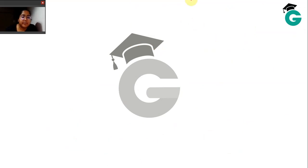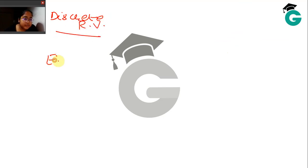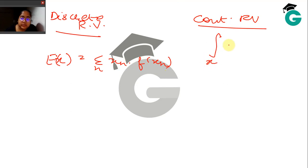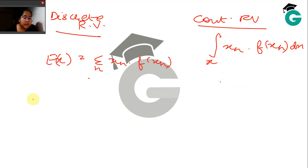For a discrete random variable, the expectation of X is defined as the summation over all n of x_n · f(x_n). For a continuous random variable, you define it as the integral over all values of x of x · f(x) dx. The only difference is summation versus integral, which is quite obvious.